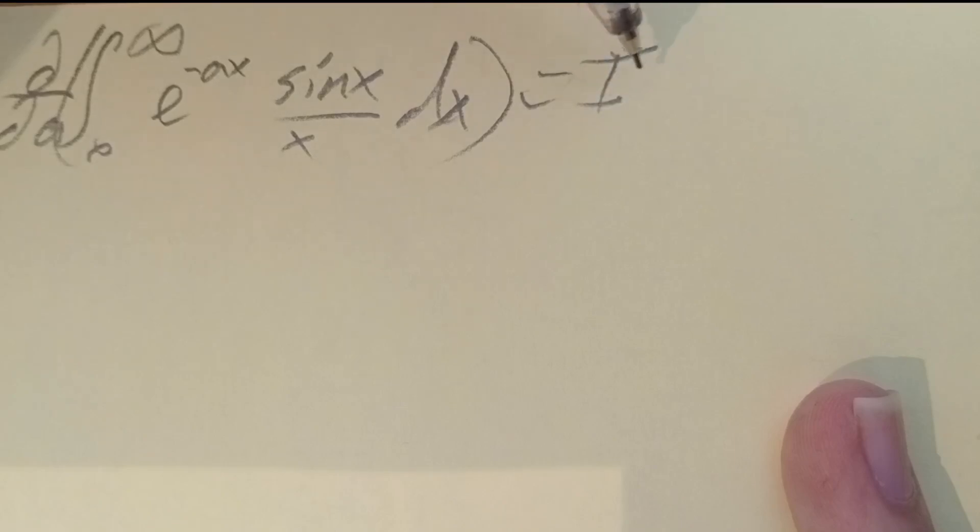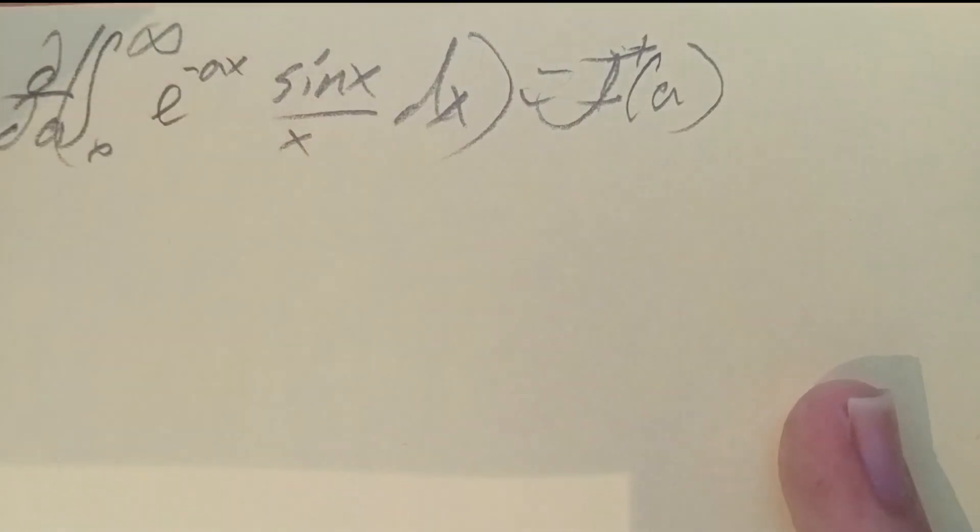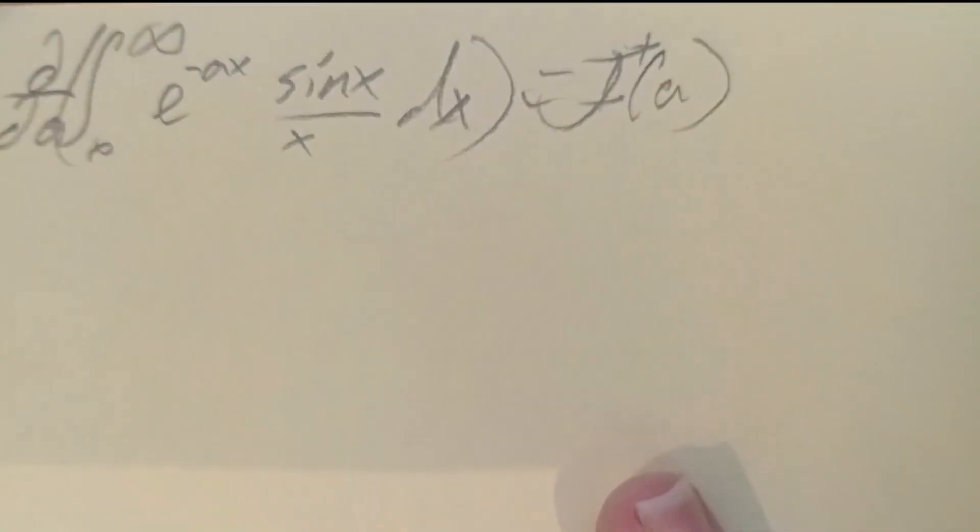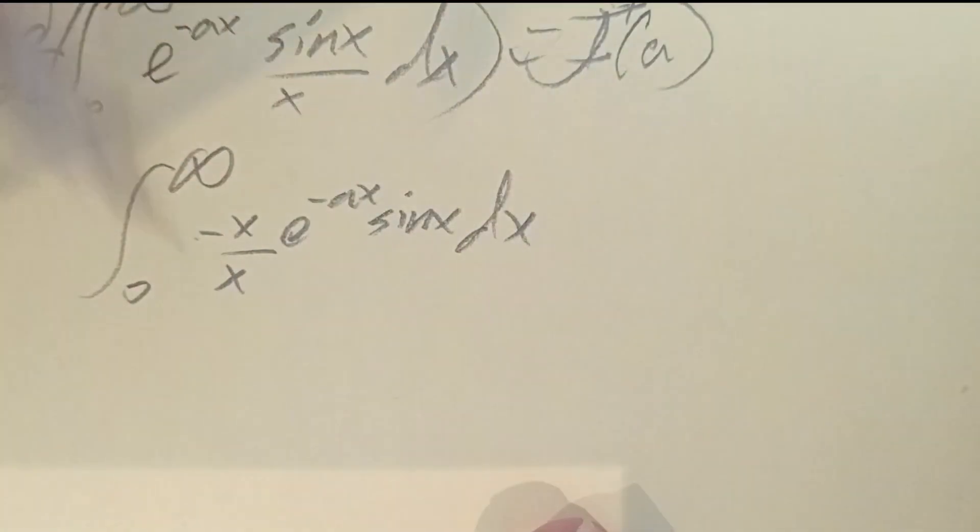Let's take the partial derivative of both sides. We need our target integral, which is J(a). We want J(0), because that exponential will cease to exist and collapse to 1, leaving us with sin(x) over x. Hence we get the integral from 0 to infinity of negative x over x, times e to the negative ax, times sin x, dx. The x's cancel out.